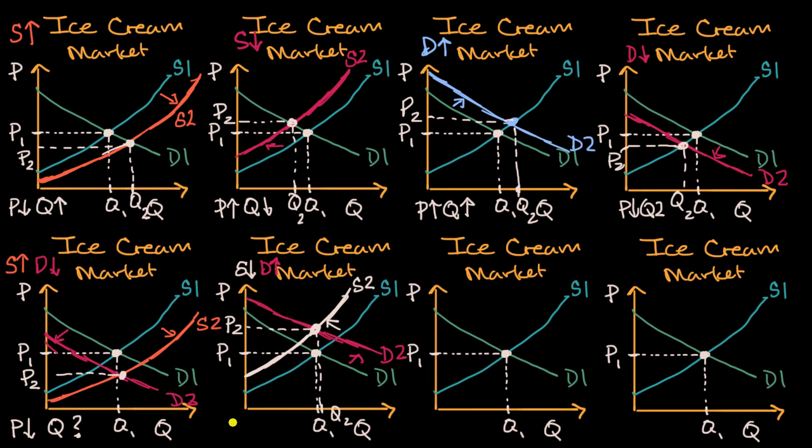Well, the price unambiguously goes up. And it makes sense. Our supply has gone down. And more people want to buy the ice cream. But what about quantity?